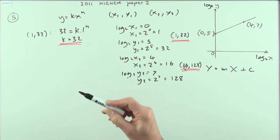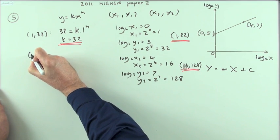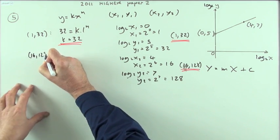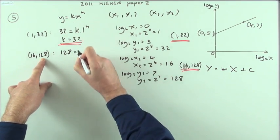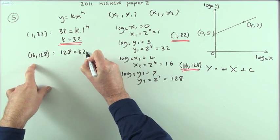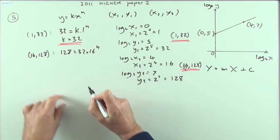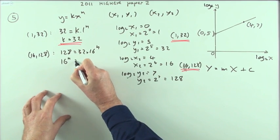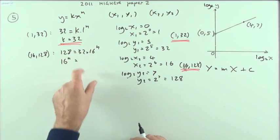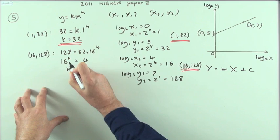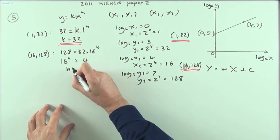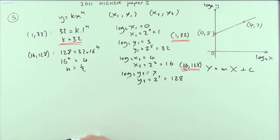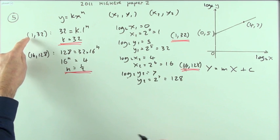And once you know that k is 32, when it comes to using the other point, which was 16, 128, I'd have y 128 equals, I already know that k is 32 now, times 16 to the power n. So 16 to the power n equals, take the 32 cross and divide, and that's 4. And in that particular case, you know that n is going to be a half, because that's the square root. And there would be the answer. But again, that was oversimplified because of that number 1.